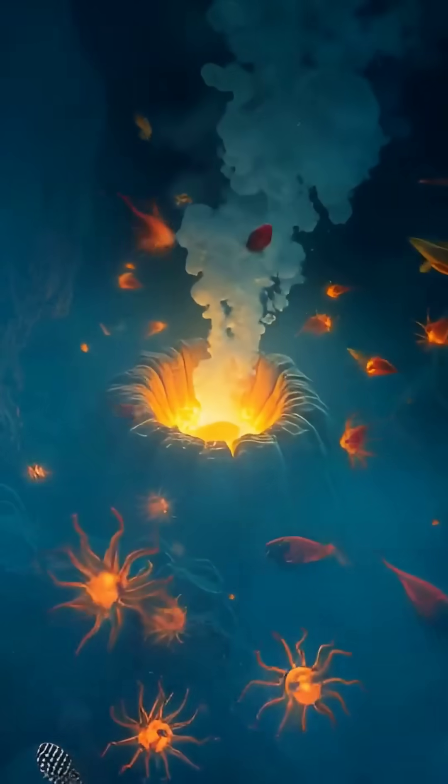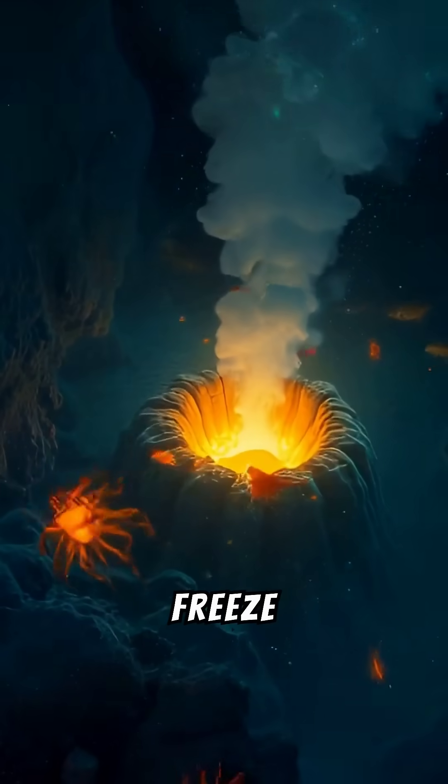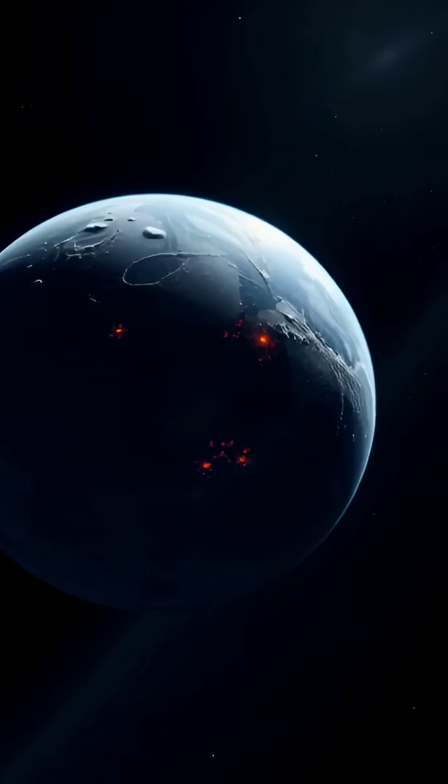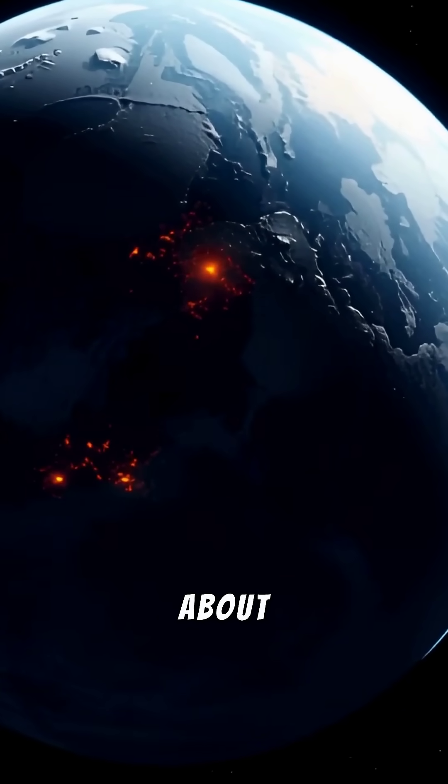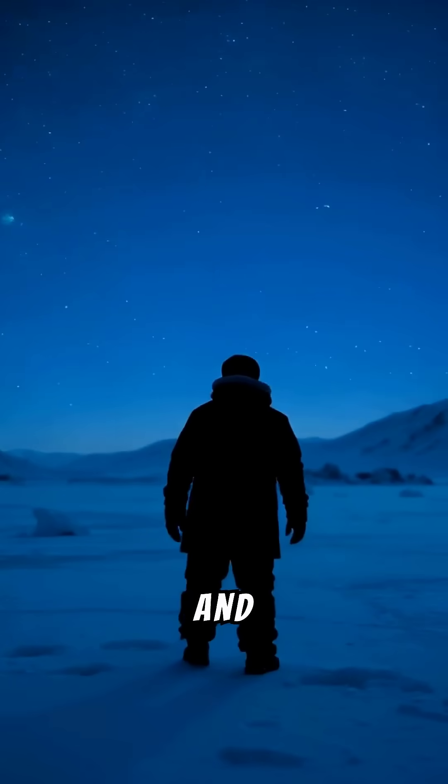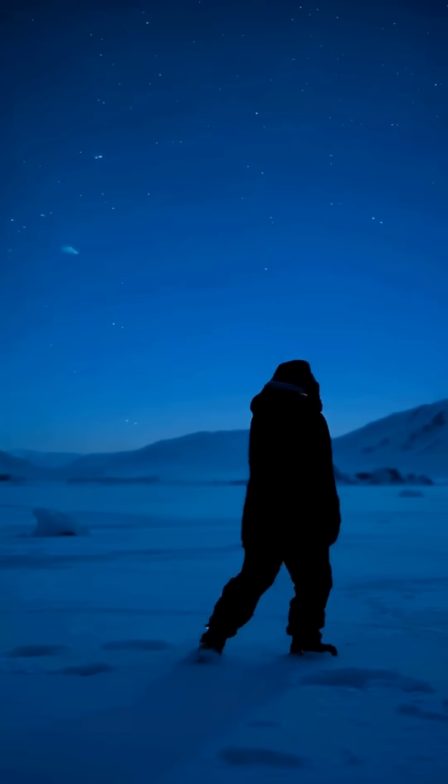The oceans, which retain heat for longer, would begin to freeze from the surface. In about two months, the average temperature of the Earth would fall to about 100 degrees below zero and the seas would be covered by a layer of ice.